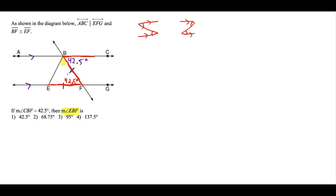Triangle EBF is isosceles because it has two congruent sides. Anytime you have an isosceles triangle, the angles opposite the congruent sides are also congruent. So if we're looking for angle EBF and call it X, we can look across from the other congruent side and call that angle X as well. We can call both of them X.